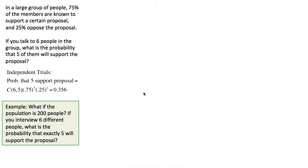Now if we know the population size, we can alternately do a calculation based on sampling without replacement. Let's suppose the population size is 200 people, and again 75% of them are known to support the proposal. We're going to interview six different people — and when you say six different people, that's talking about sampling without replacement.